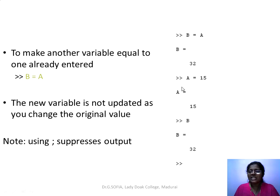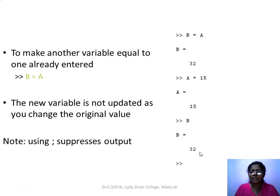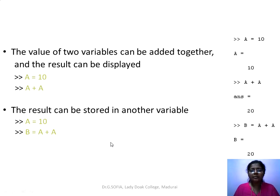If the value of a is changed to 15, b will still show its last assigned value of 32. To suppress intermediate output, use a semicolon — semicolon always suppresses the intermediate output. The values of two variables can be added with the arithmetic plus operator. For example, if a equals 10, then 'a + a' gives ans = 20, or you can assign it as 'b = a + a', making b equal to 20.